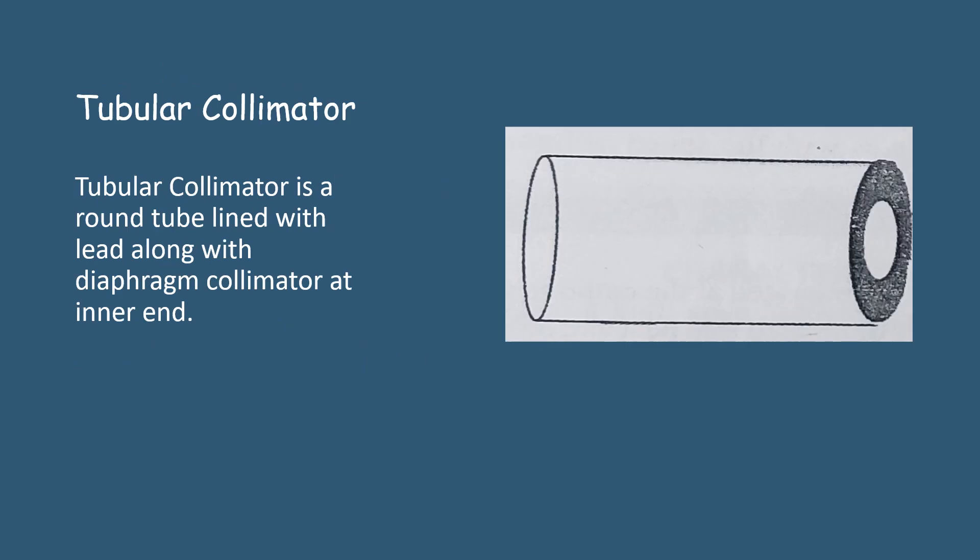So the next is tubular collimator. Tubular collimator is a round tube lined with lead along with the diaphragm collimator at inner end.